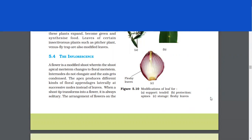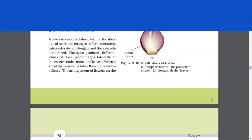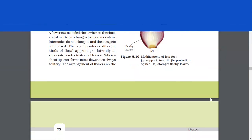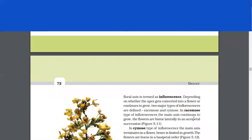The inflorescence. A flower is a modified shoot wherein the shoot apical meristem changes to floral meristem. Internodes do not elongate and the axis gets condensed. The apex produces different kinds of floral appendages, laterally, at successive nodes instead of leaves. When a shoot tip transforms into a flower, it is always solitary. The arrangement of flowers on the floral axis is termed as inflorescence.